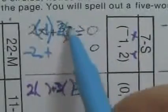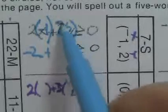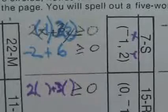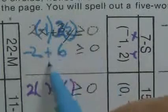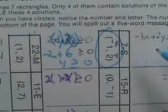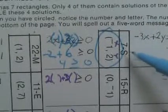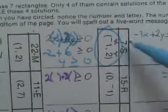For our first problem, x is negative 1 and y is 2. So I have 2 times negative 1, which is negative 2, plus 3 times 2, which is 6. Negative 2 plus 6 is 4. Is 4 greater than or equal to 0? Yes, it is. So box 7 gets an S.